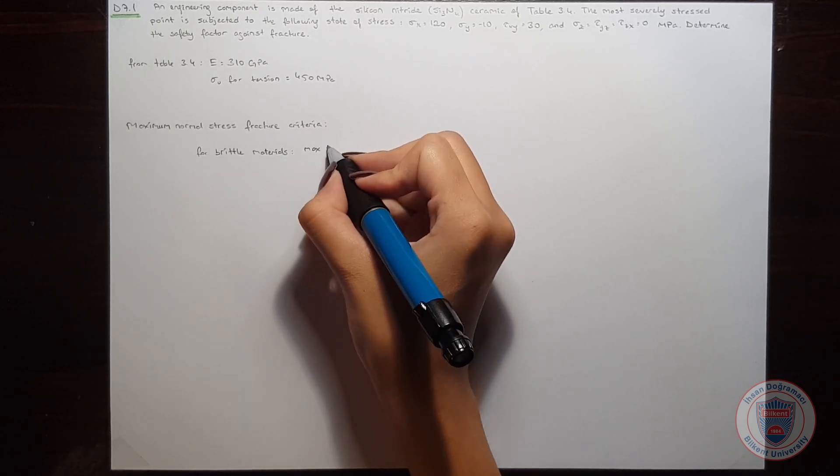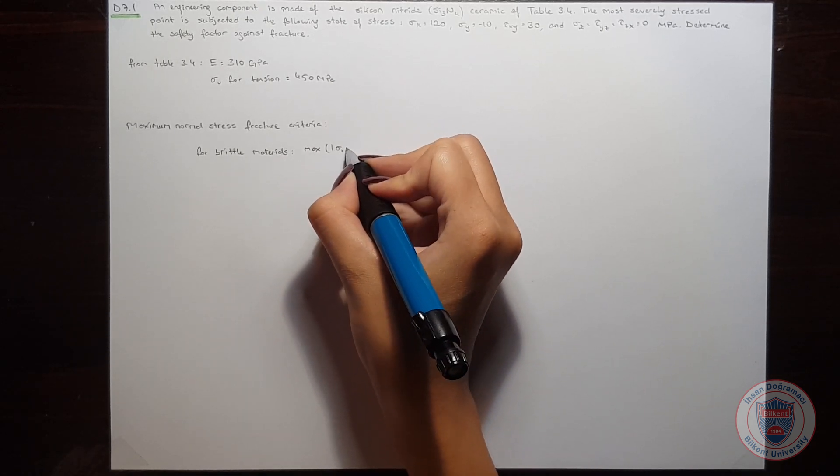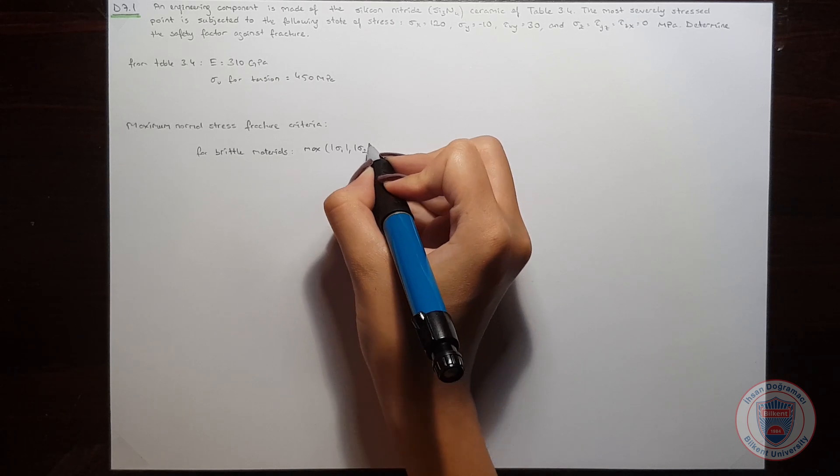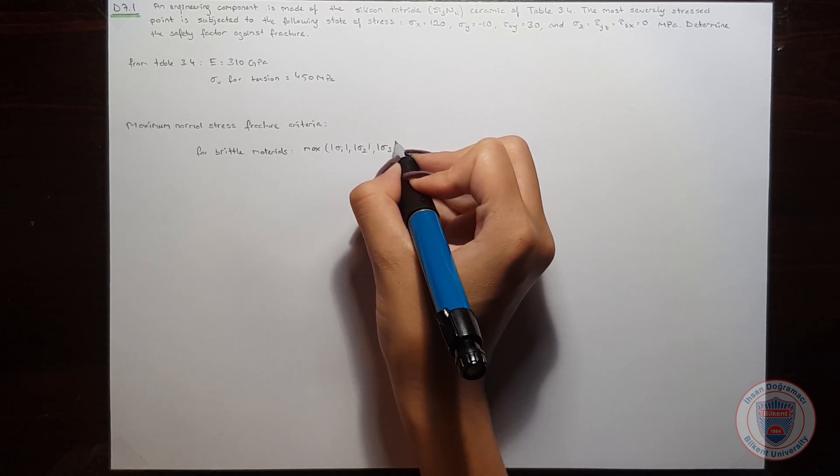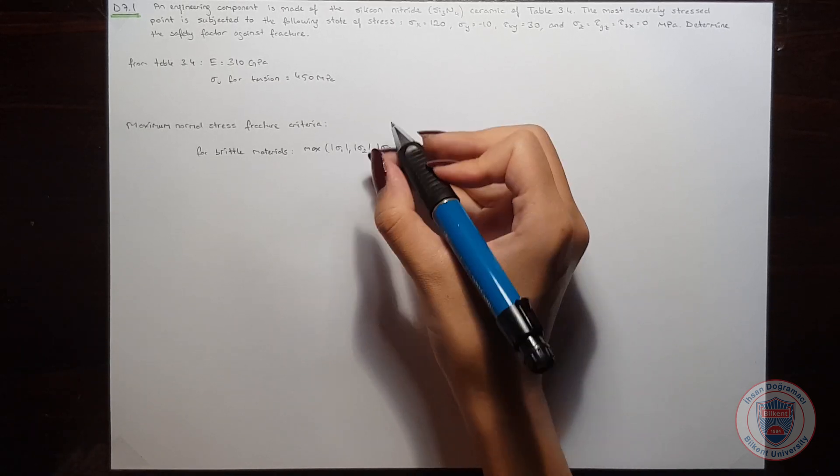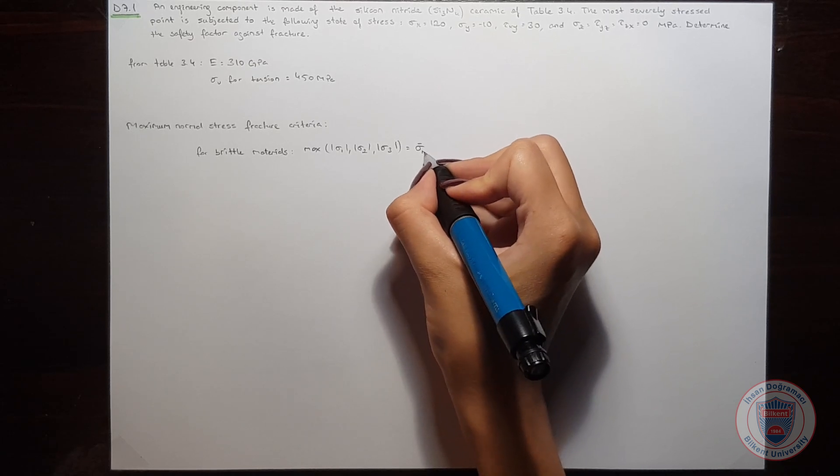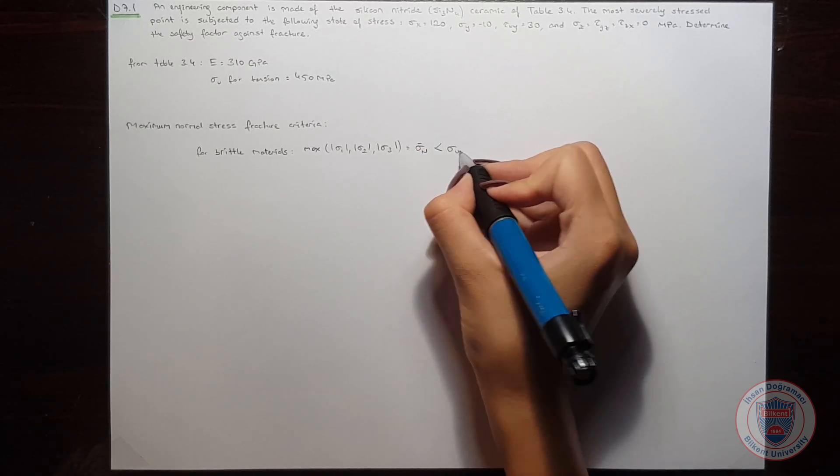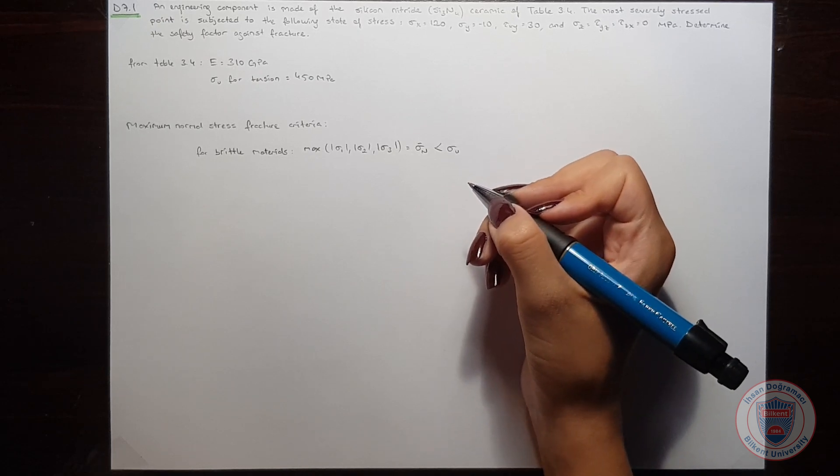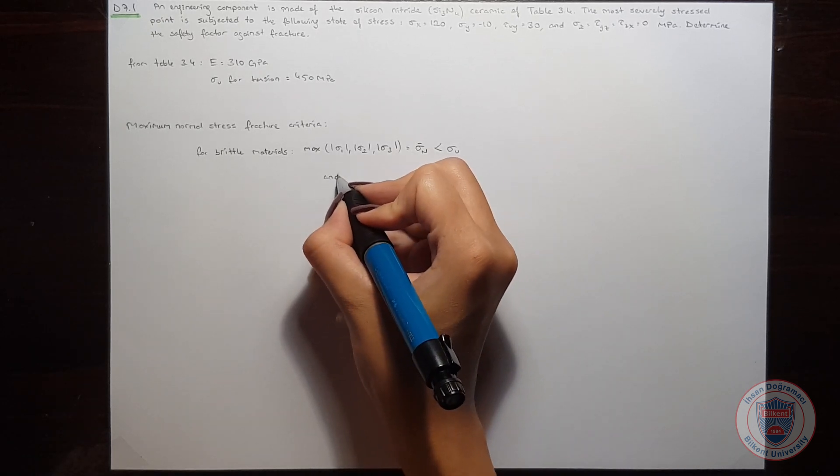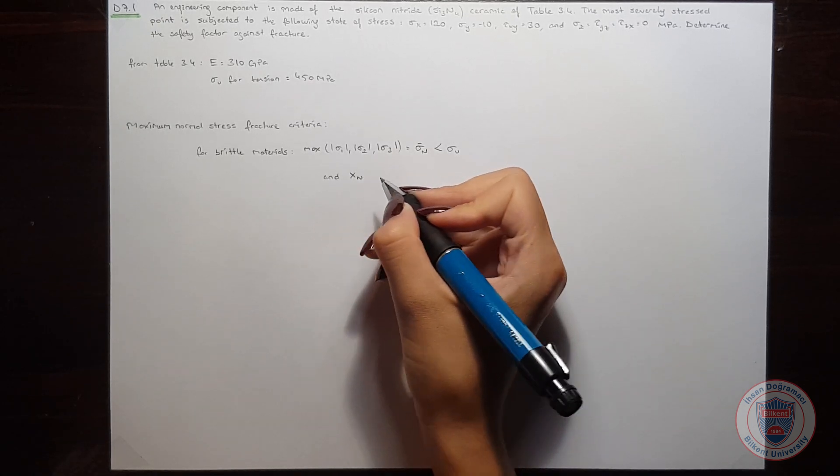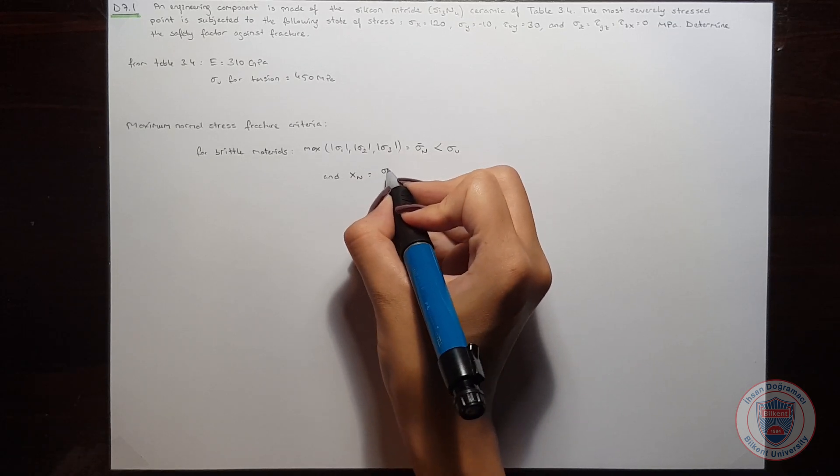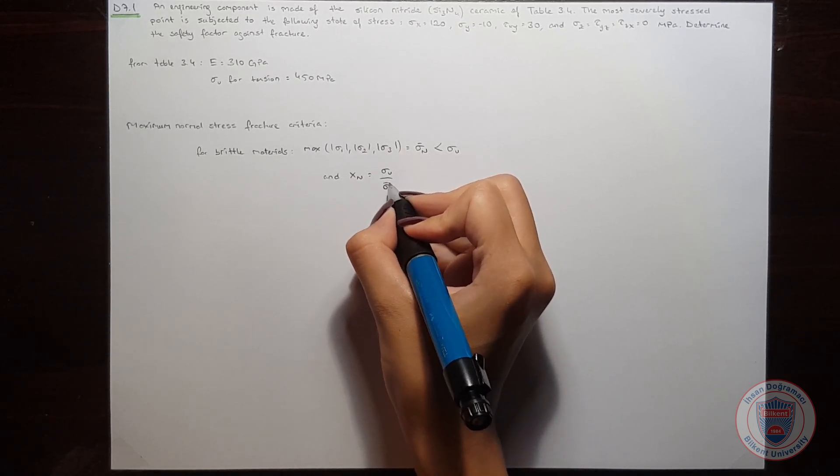maximum of sigma 1, sigma 2, and sigma 3 is equal to sigma n, and it should be smaller than sigma u. The safety factor against fracture will be sigma u over sigma n.